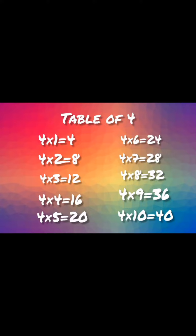Four ones are four. Four twos are eight. Four threes are twelve. Four fours are sixteen. Four fives are twenty.